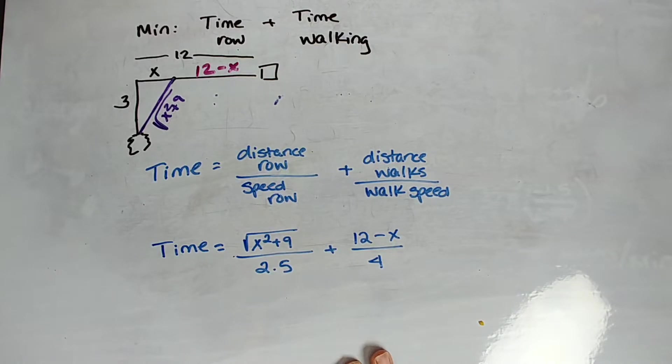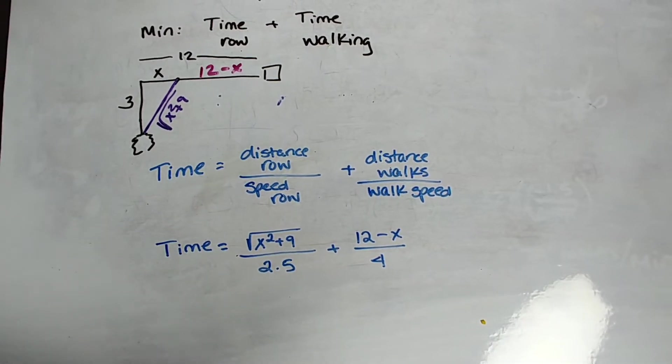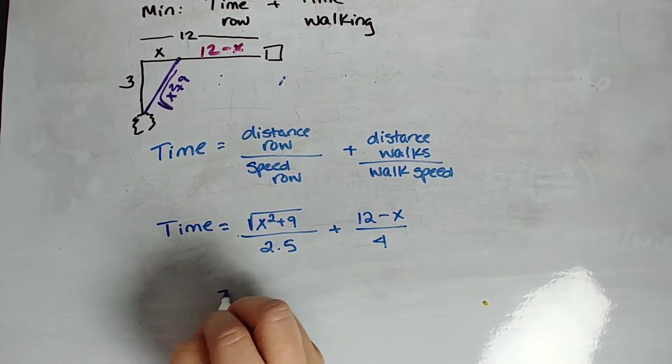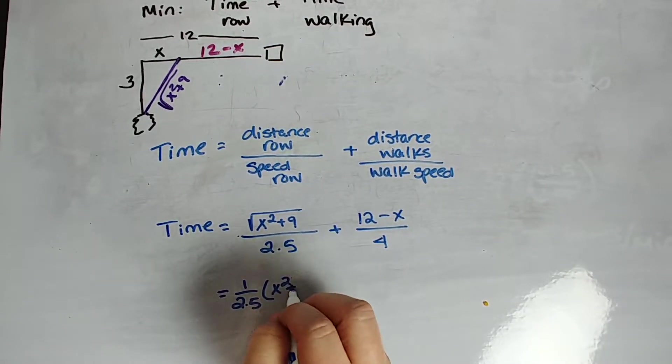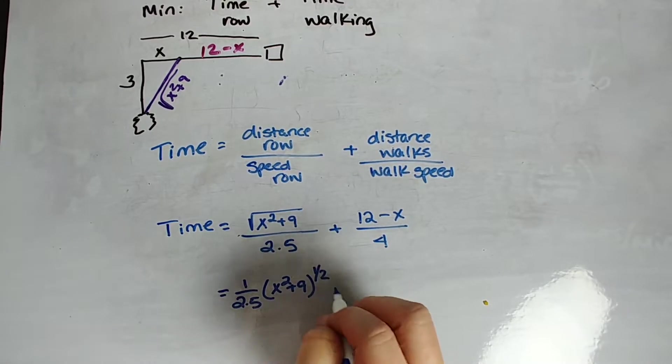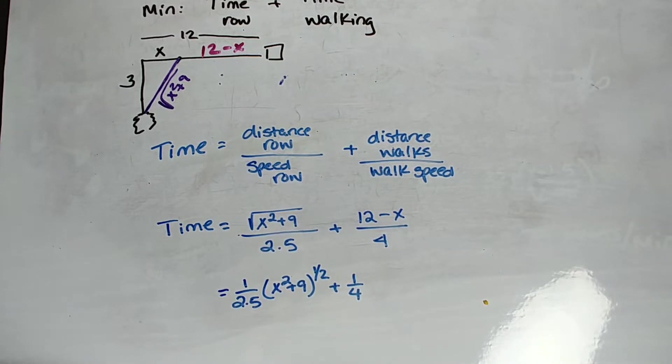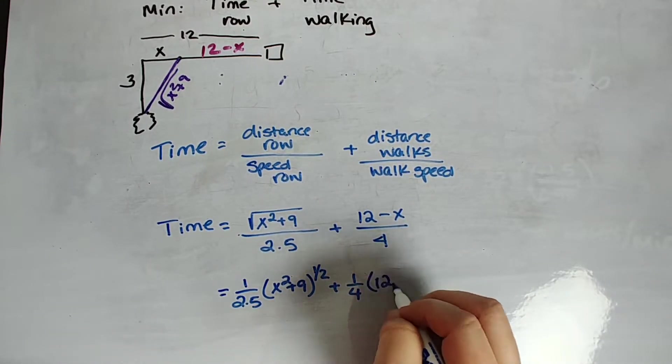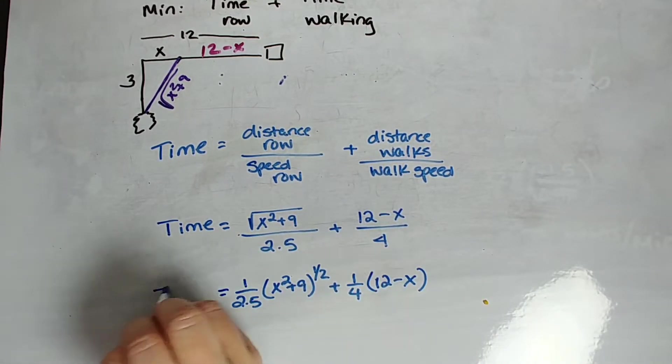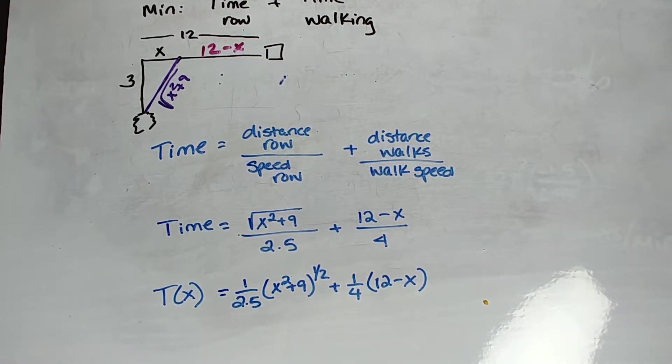So we have time equals, remember her distance that she rowed, or rows, is X squared plus 9 over the speed 2.5, plus the distance that she walks is 12 minus X all over her speed, which is 4. All right, so we have an equation. It is in one variable. I'm not sure it's super pretty. In fact, I hate the denominators. So we're just going to make these denominators fractions that we multiply.